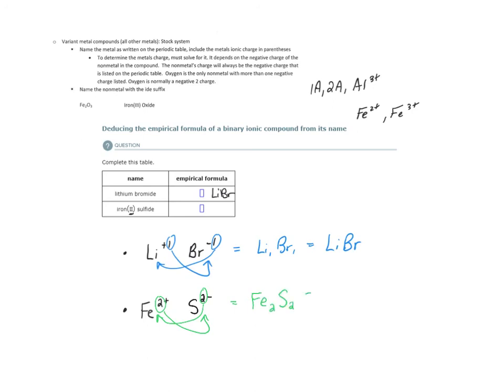I can't leave it like this because empirical formula is the simplified ratio of the cation and anion to each other. So this simplifies to FeS. I can divide both of these subscripts by 2. And so FeS would be my empirical formula for iron 2 sulfide.